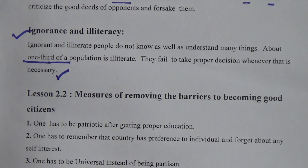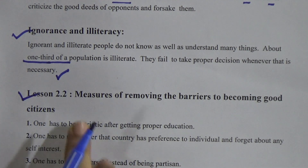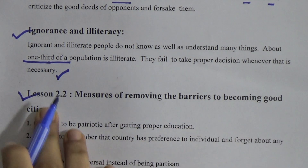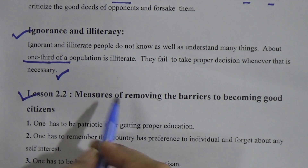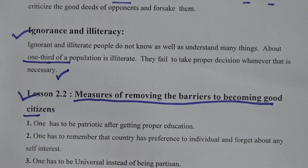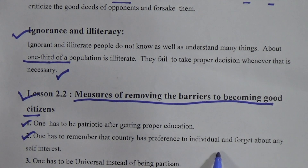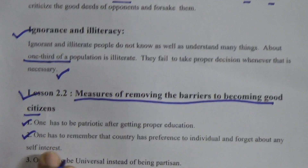These are the points which are the barriers to becoming a good citizen. In your book you will get more points, and you should go through the topics. If you find any problem, you can call me or discuss in the live class. Now lesson 2.2 — measures of removing the barriers to becoming a good citizen. Number one: one has to be patriotic after getting proper education. Whenever we get proper education, we need to be patriotic. One has to remember that the country has preference over the individual and we must forget about any self-interest.